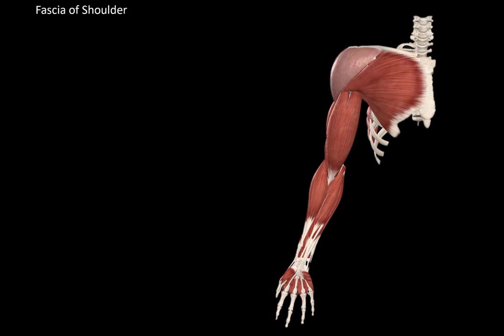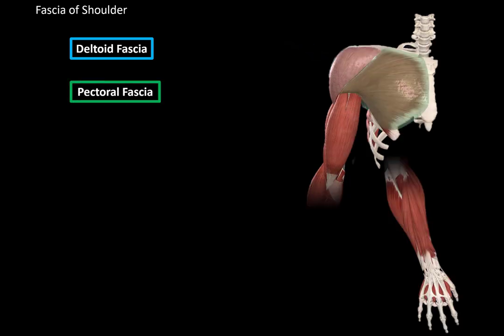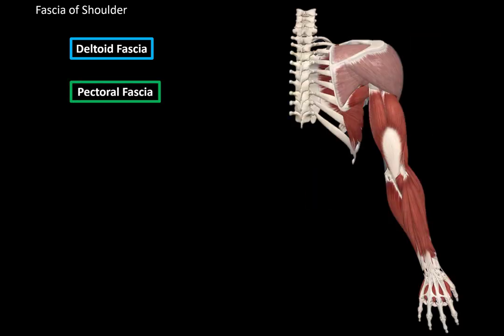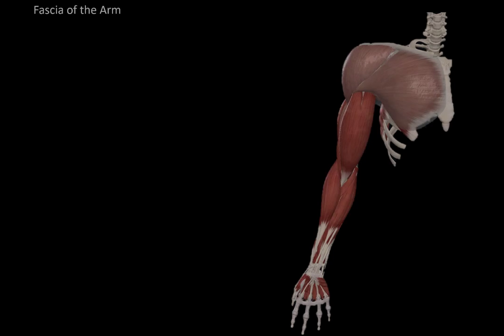The first fascia is called the deltoid fascia, covering the deltoid muscle. Then we have the pectoral fascia, which covers the pectoralis major. Looking at the posterior view of the shoulder, we will find the infraspinatus fascia, covering the infraspinatus muscle, and the supraspinatus fascia for the supraspinatus muscle. Those were generally the most important fascias of the shoulders.